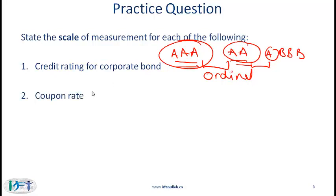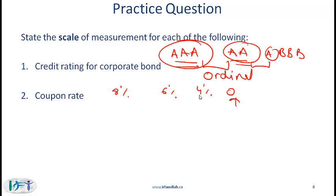Next, coupon rate: bonds often pay a certain coupon expressed as a rate. If one bond pays an 8% coupon versus another that pays 6%, you might also have zero coupon bonds. This is a ratio scale because we have an absolute zero, and if a bond pays 4% we can say it is paying a coupon twice that of a 2% bond.